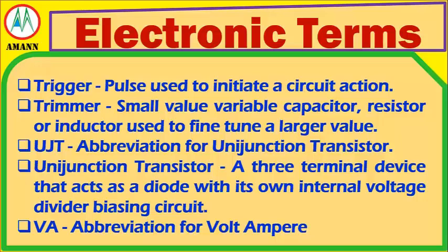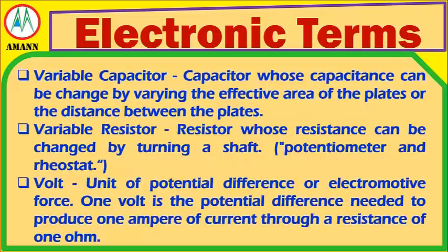VA: An abbreviation for volt-ampere. Variable Capacitor: A capacitor whose capacitance can be changed by varying the effective area of the plates or the distance between the plates. Variable Resistance: A resistor whose resistance can be changed by turning a shaft.